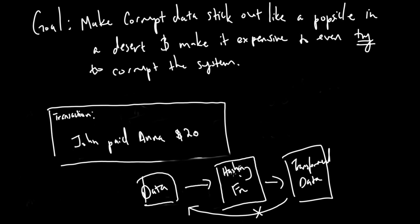So if you run the hashing function on that data once, you get the same transformed data. You run it again on the same data — same transformed data. It never changes.